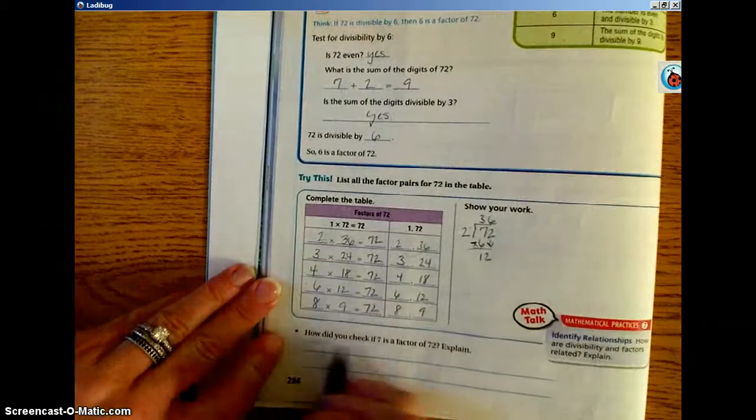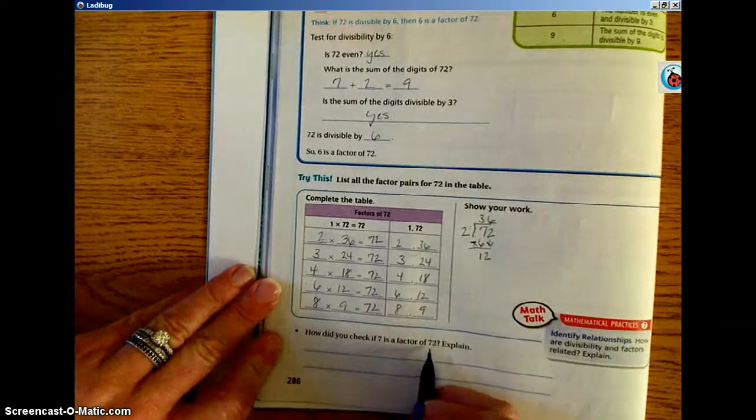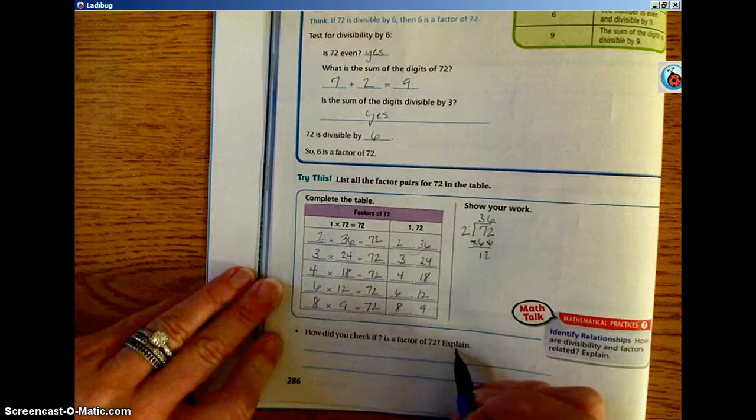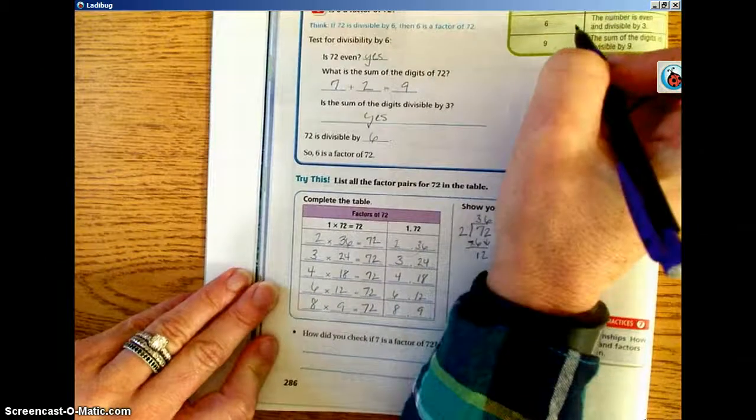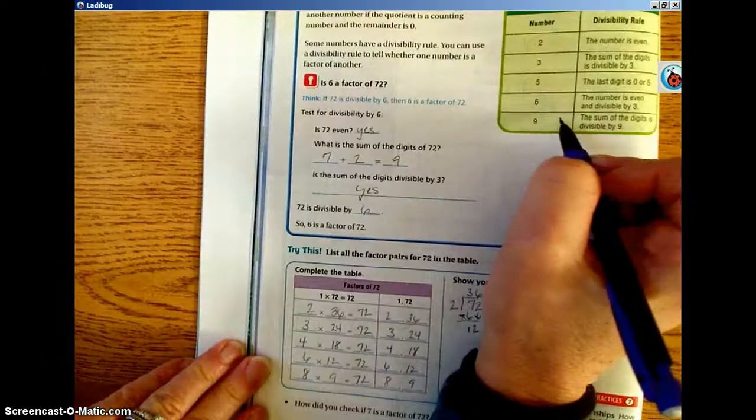How did you check if 7 is a factor of 72? Explain. Well, there is no divisibility rule for 7. If you go back up to the chart, there's not a rule up here for 7. So one way that we could do it is we could actually divide.